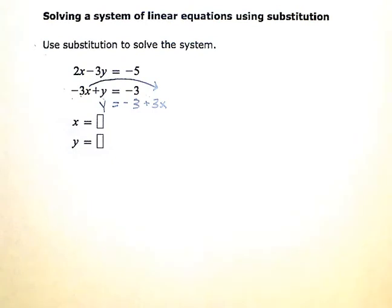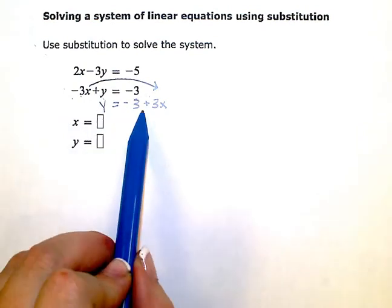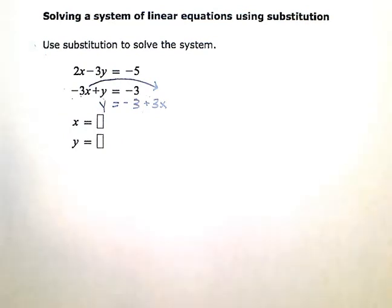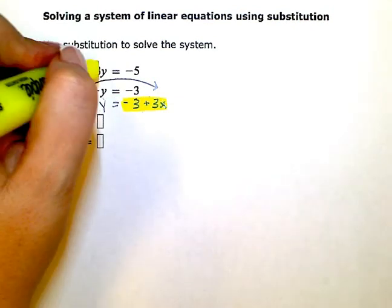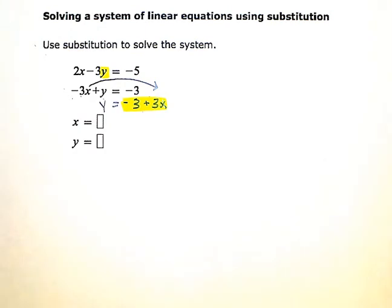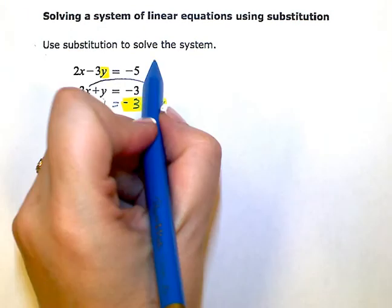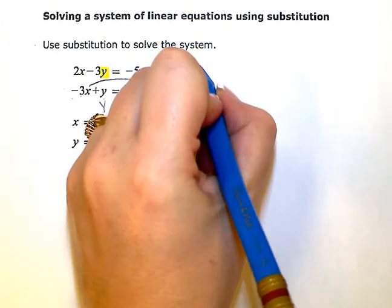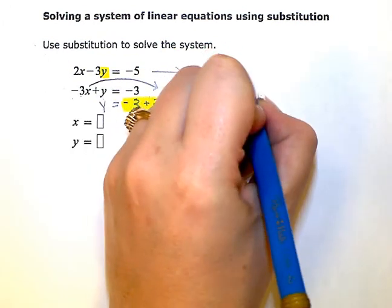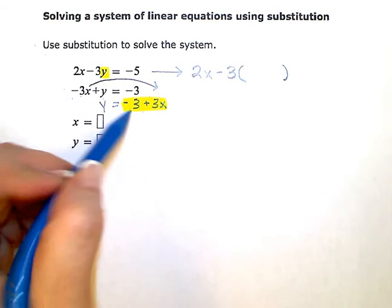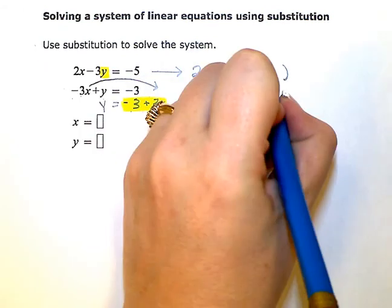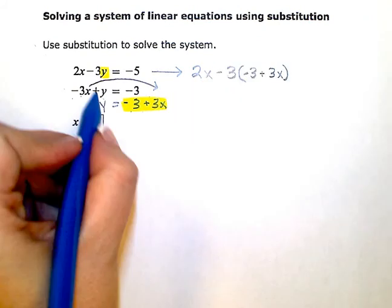Now I have one of my equations in y equals form. And this equation is telling me that instead of y, I can interchange it with negative 3 plus 3x. So I'm going to take this expression, negative 3 plus 3x, and in this top equation, I'm going to substitute that in for the y. So if I rewrite this top equation, it'll be 2x minus 3, and I'm going to put a parenthesis with a big space because instead of that y, I'm going to replace it with negative 3 plus 3x and then equals negative 5.